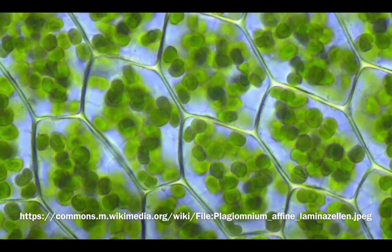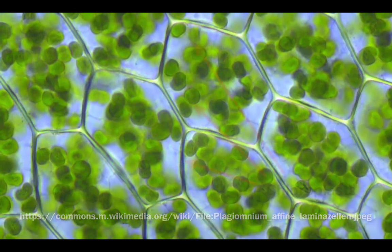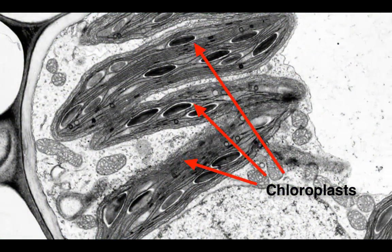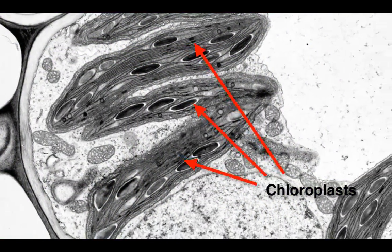Most significantly, these cells can be identified by the large number of chloroplasts they contain, as chloroplasts are the site of photosynthesis.